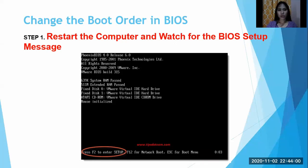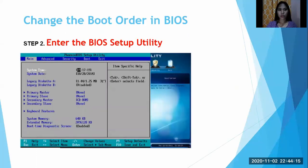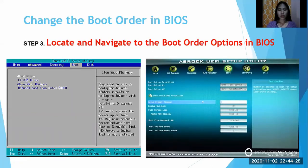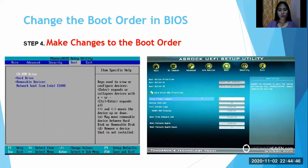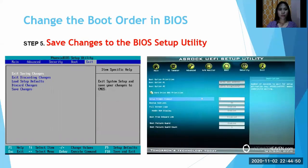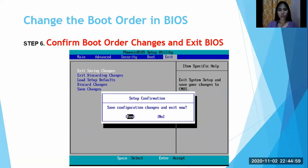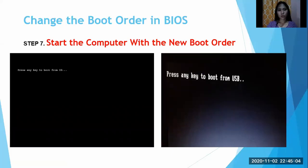To change the boot order in BIOS, restart the computer and watch for the BIOS setup message — for example, press F2 to enter the BIOS setup. After you press F2, enter the BIOS setup utility. Step 3 is to locate and navigate the boot order options in BIOS. Once you see the boot order — the hard drive, removable devices, and network boot — use your arrow keys to make changes. To save changes, click Exit Saving Changes and confirm the boot order changes. To start the computer with the new boot order, press any key to boot from CD or USB.